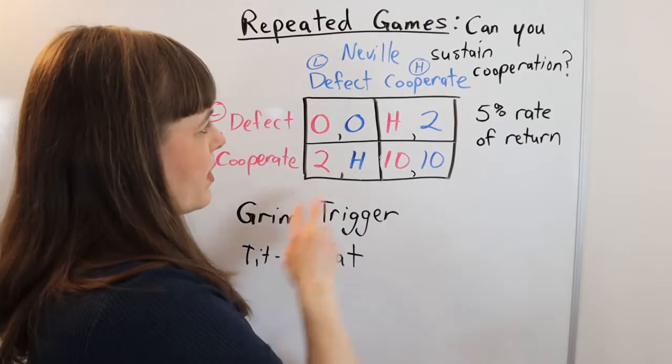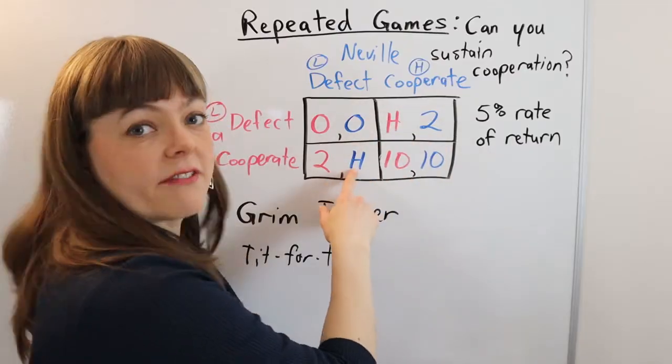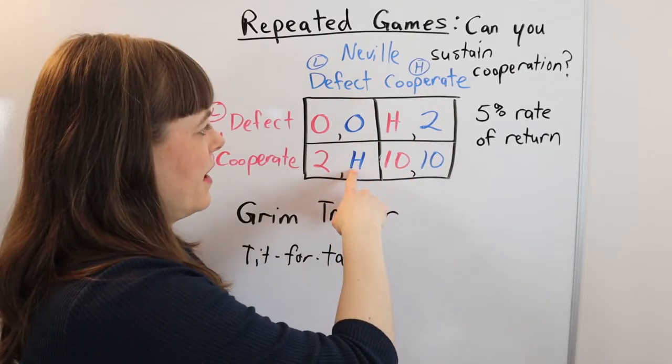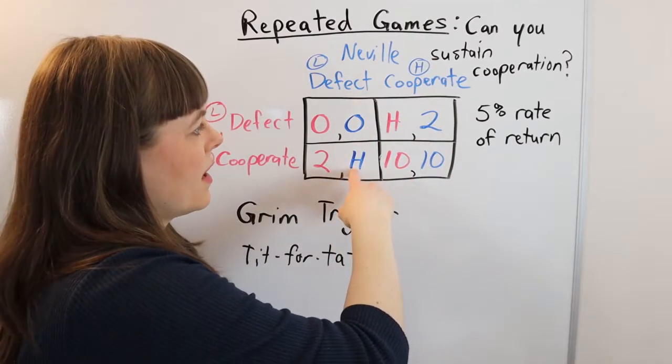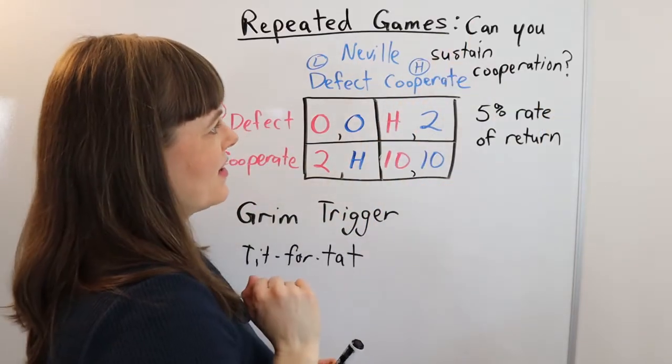So that's what we're going to do now. We're going to say under what circumstances or what values of H, values of the defect windfall, can you actually sustain cooperation?